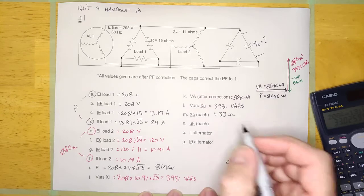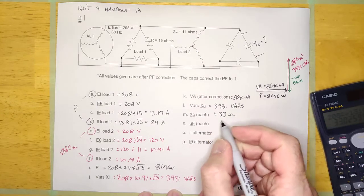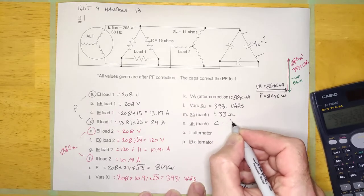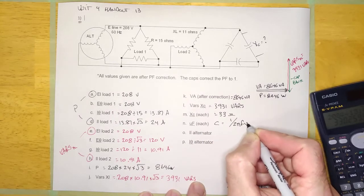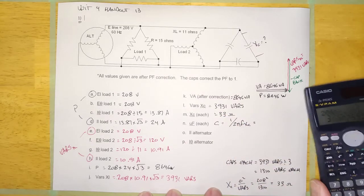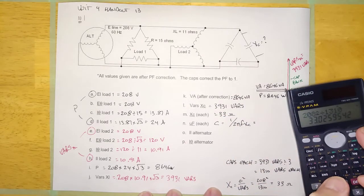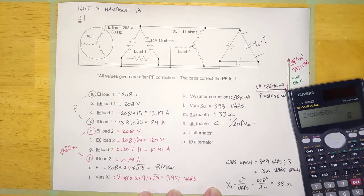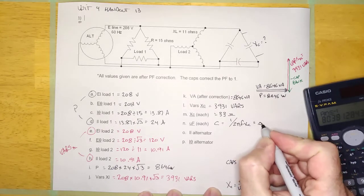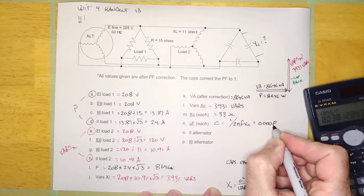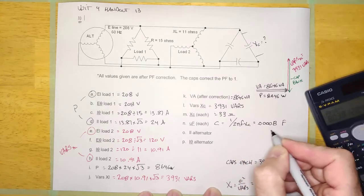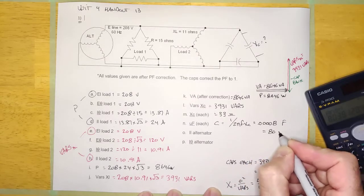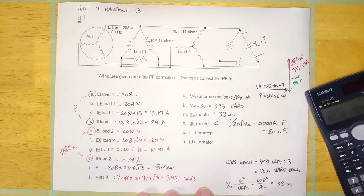We just decided XC is 33 ohms. Now we calculate the microfarads: C equals 1 over 2π f XC. So it's 1 over (2 × π × 60 × 33), which looks like 0.00008 farads, which is 80 microfarads.